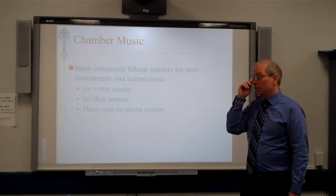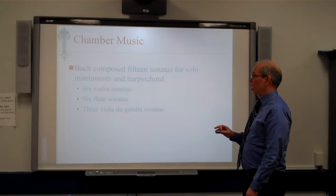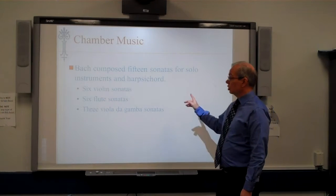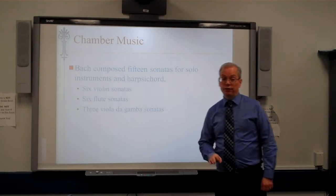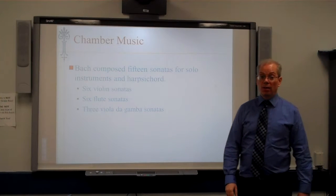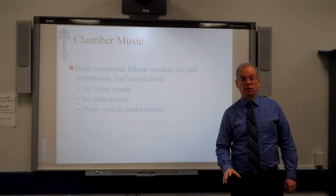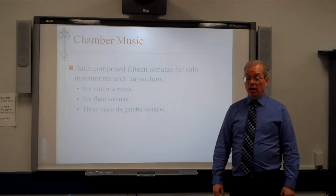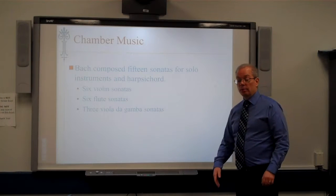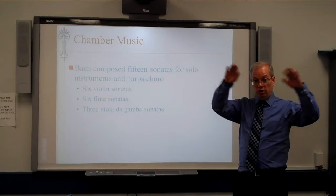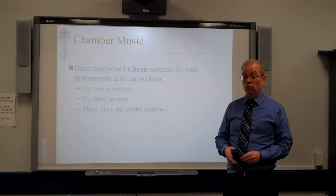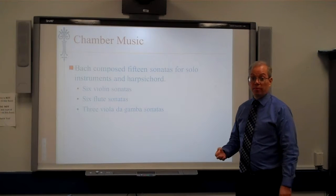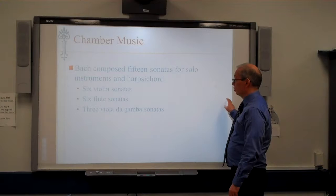Turning to chamber music, Bach composed 15 solo sonatas for a solo instrument with continuo accompaniment: six violin sonatas, six flute sonatas, and three sonatas for viola da gamba. The viola da gamba is similar to a cello in its range and the way it's bowed, but its shoulders are sloped like a double bass rather than rounded. In fact, the modern double bass is actually a member of the gamba family, not the violin family.